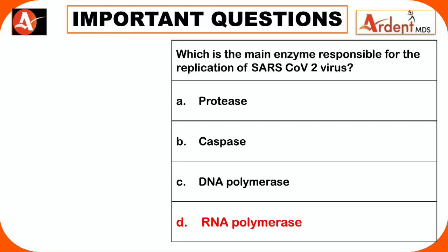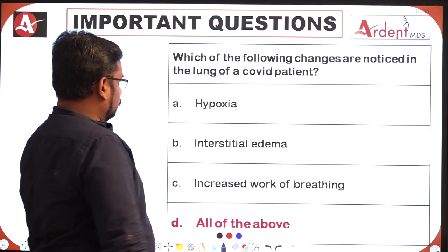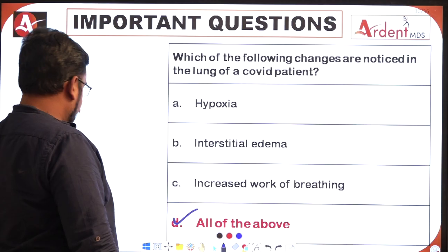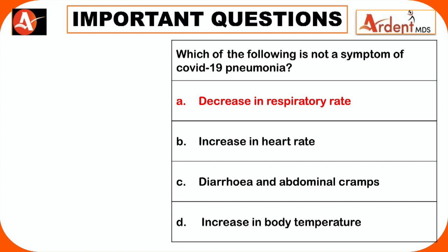The main enzyme responsible for replication of SARS-CoV-2 is RDRP — RNA-dependent RNA polymerase. Changes noticed in the lungs of a COVID-19 patient include hypoxia, interstitial edema, and increased work of breathing — so the answer is all of the above. A symptom that is NOT seen in COVID-19 is decreased respiratory rate — in COVID-19, respiratory rate is increased; if more than 30, the patient is considered severe.